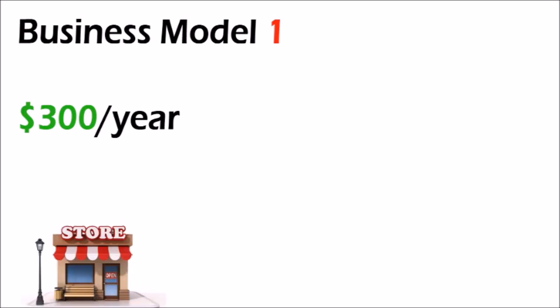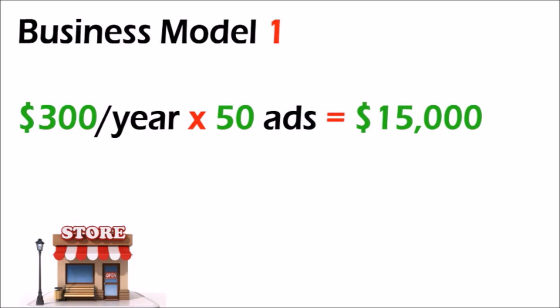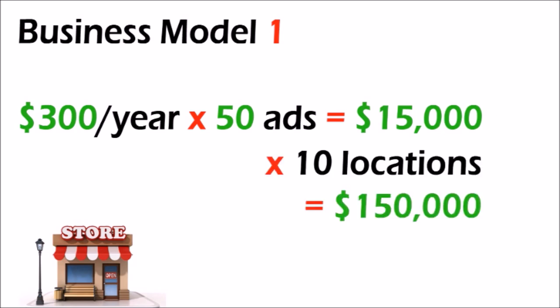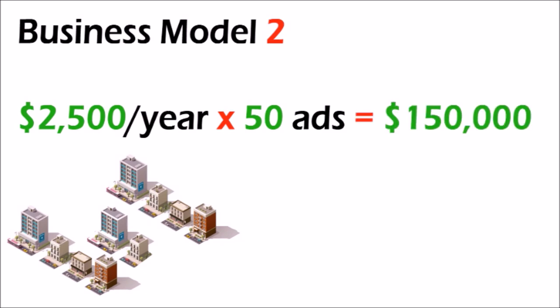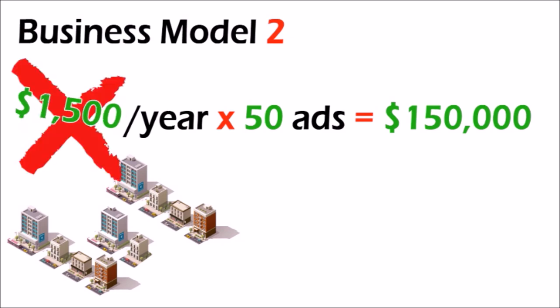Business Model 1: Let's say you charge $300 per year for one location and you sell 50 ads per location. Your net income would be 50 ads times $300 per ad equals $15,000 per screen location, multiplied by 10 locations equals $150,000 per year in revenue. Business Model 2: If you charge $2,500 for all 10 locations, then 50 ads multiplied by $2,500 per ad would also yield $150,000 per year. Even at $1,500 for all 10 locations, multiplied by 50 ads, that's $75,000 yearly. Not bad!